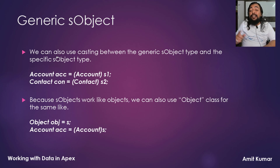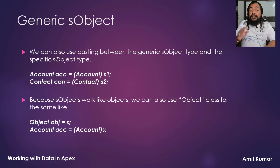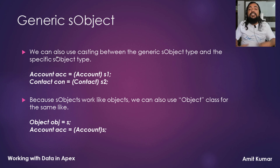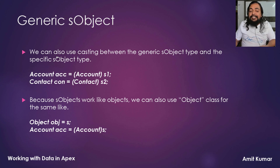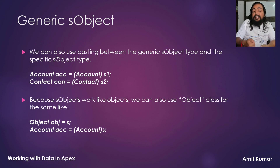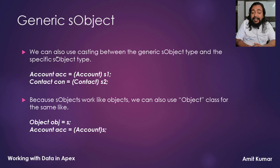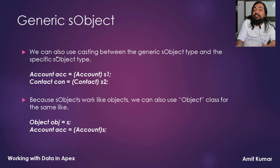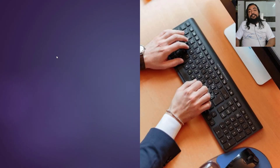Because sObjects work like objects, we can also use the Object class for the same purpose. Object is a generic type which can be used to represent any data type, and because sObject is also a data type, we can use Object to do the same. For example, if I have created an Object variable obj assigned to an sObject value, I can typecast obj to an Account variable, and it will work similarly.